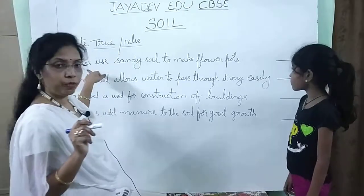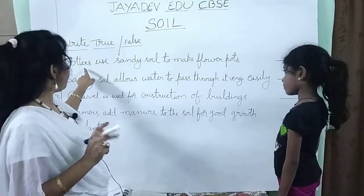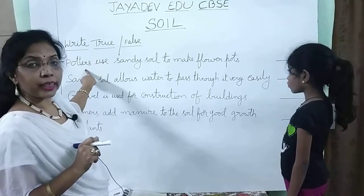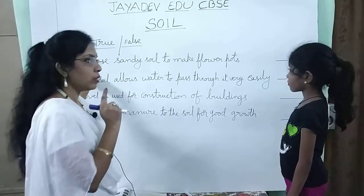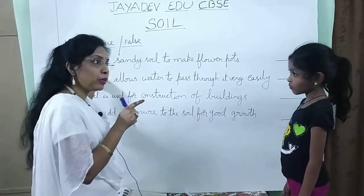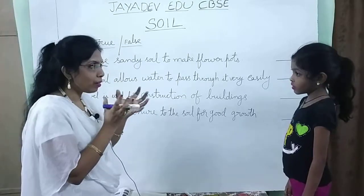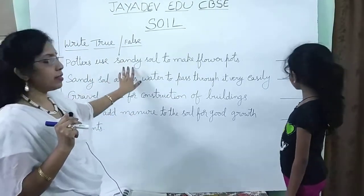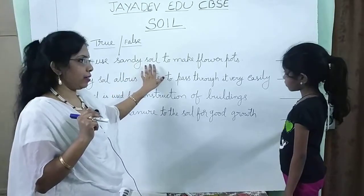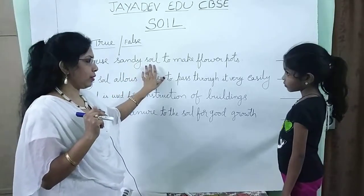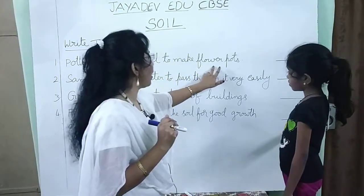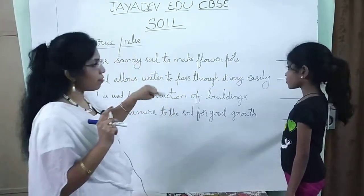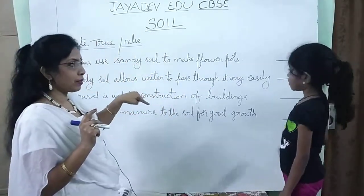Here, the first one is potters. You know potters means who? Potters — what they do? They make pots. The statement is: Potters use sandy soil to make flower pots. True or false? It is false.